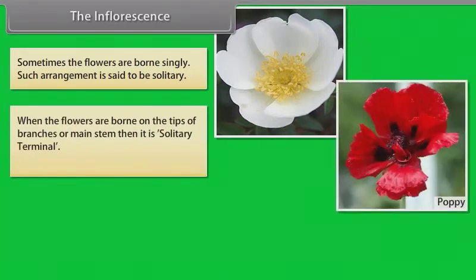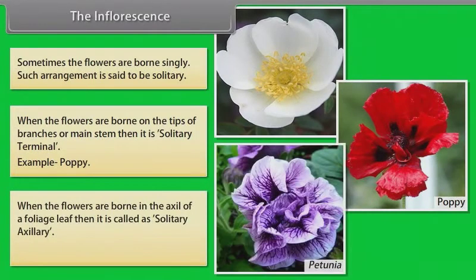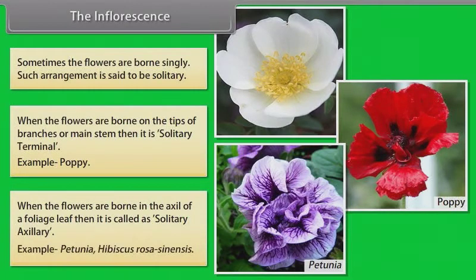When the flowers are borne on the tips of branches or main stem, then it is solitary terminal. When the flowers are borne in the axil of a foliage leaf, then it is called solitary axillary. Examples: Petunia, Hibiscus rosa-sinensis.